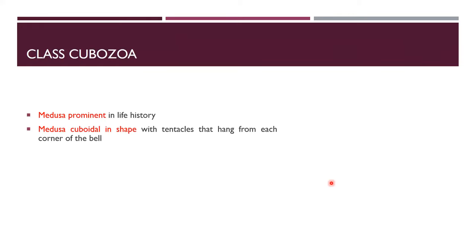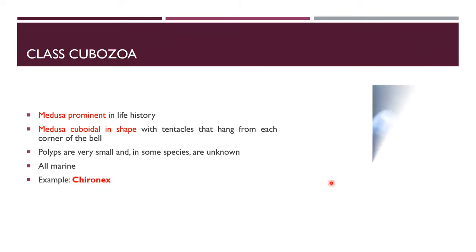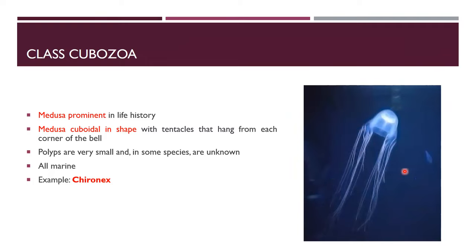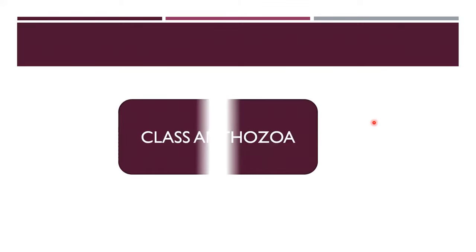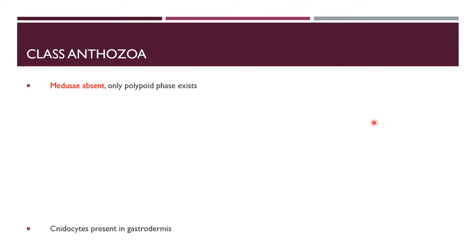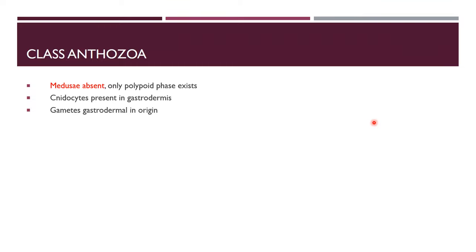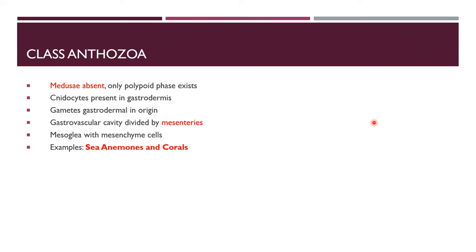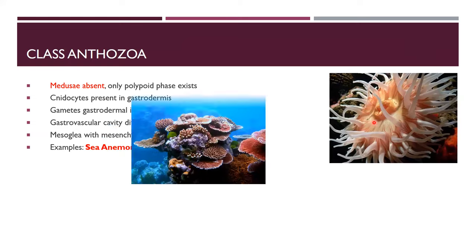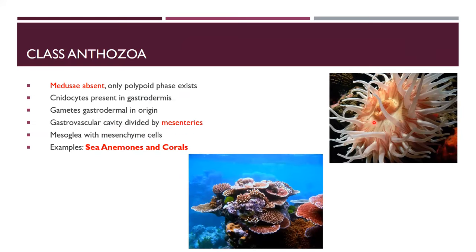Class Cubozoa has a prominent, cuboidal-shaped medusa with small polyps; all are marine. Example: Chironex. Class Anthozoa: medusa is absent, only the polyp phase exists. Cnidocytes are present in gastrodermis; gametes are gastrodermal. The gastrovascular cavity is divided by mesenteries; mesoglea contains mesenchyme cells. Examples: sea anemones and corals.